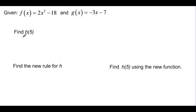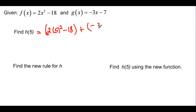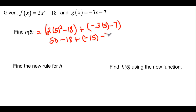Given these two functions, find h of 5. We can say h of 5, where h was f plus g, is found by taking 2 times 5 squared minus 18 for f of x, plus negative 3 times 5 minus 7 for g of x. This gives us 25 times 2, or 50, minus 18. I can drop the parenthesis because I'm adding. Negative 3 times 5 is negative 15, and then minus 7. So we have 50 minus 40, and we find out that it is 10.